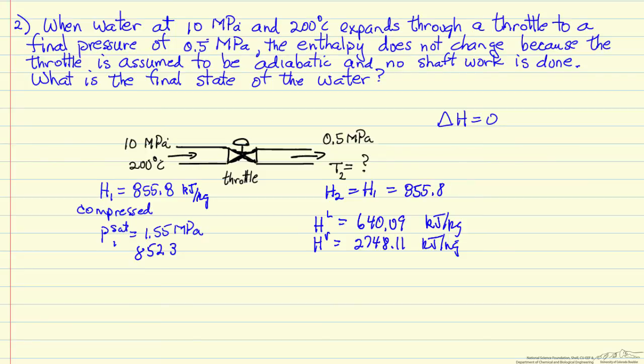which means we have a liquid and a vapor, and it means we are at saturation condition. So the final temperature is 151.8 degrees C, because that is saturation temperature at 0.5 MPa, and then we can determine what is the fraction of liquid and what is the fraction of vapor in this exit stream.